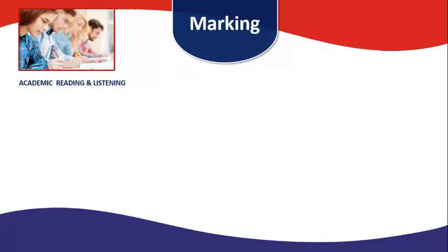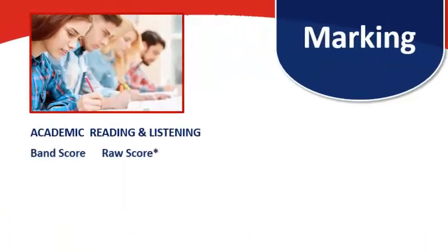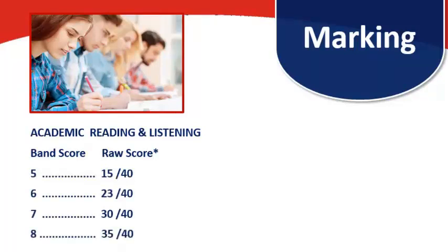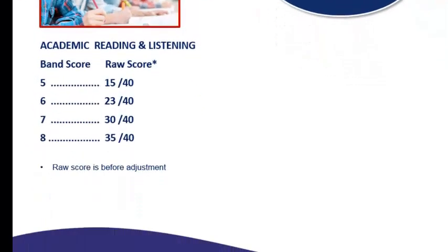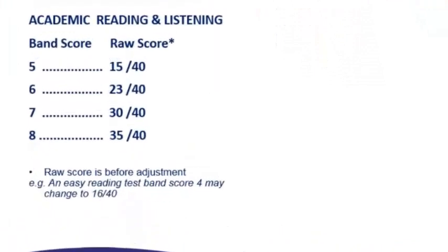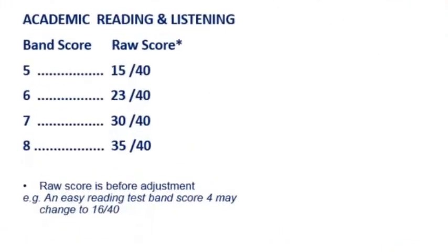In terms of those parts of the test, you are given a band score, and that depends on the marks that you get out of 40. You see the marks coming up here down the side from 5 to 8 — of course, it goes from 1 or 0 even to 9. Half band scores are in between those marks. With the raw score mark, it's a mark determined across a range, so for example, band score 5 may be 14, 15, or 16, and then 5.5 might be 18, 19, 20, or 21.